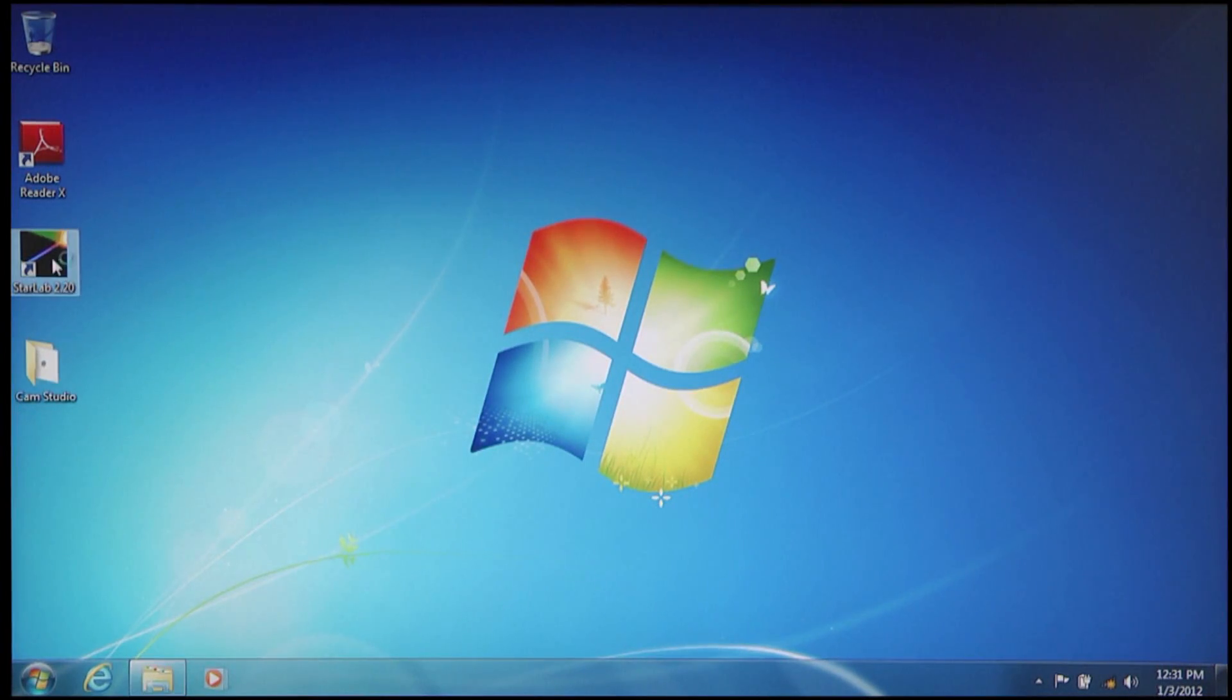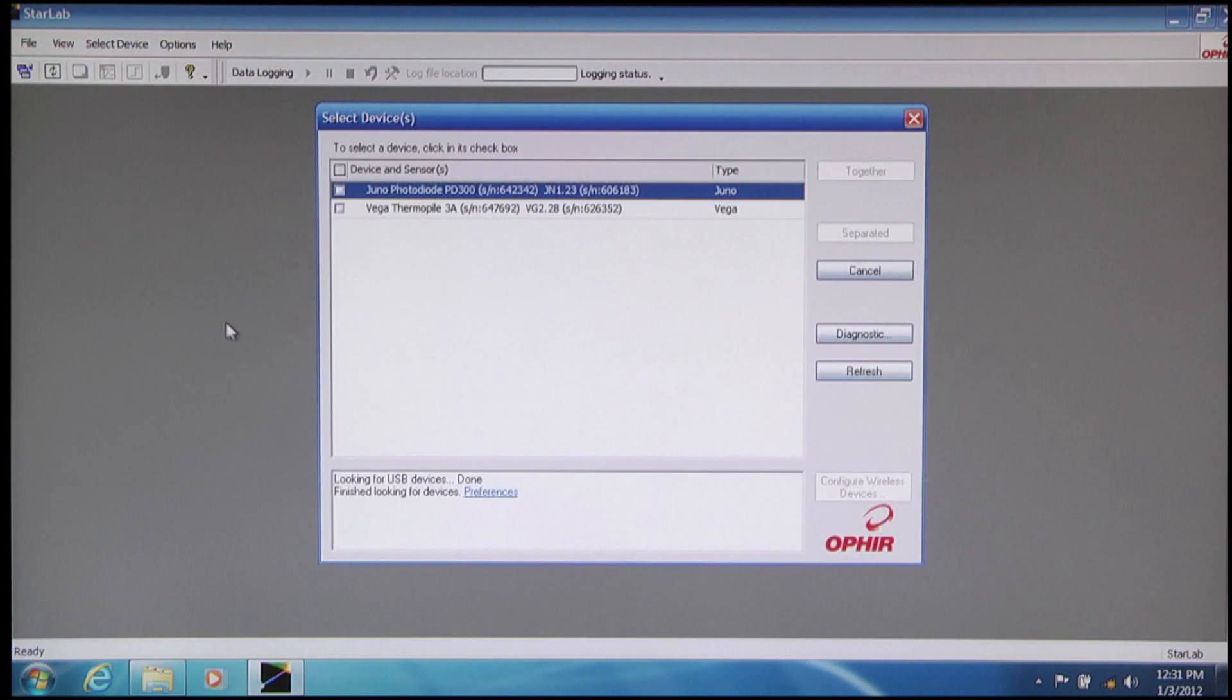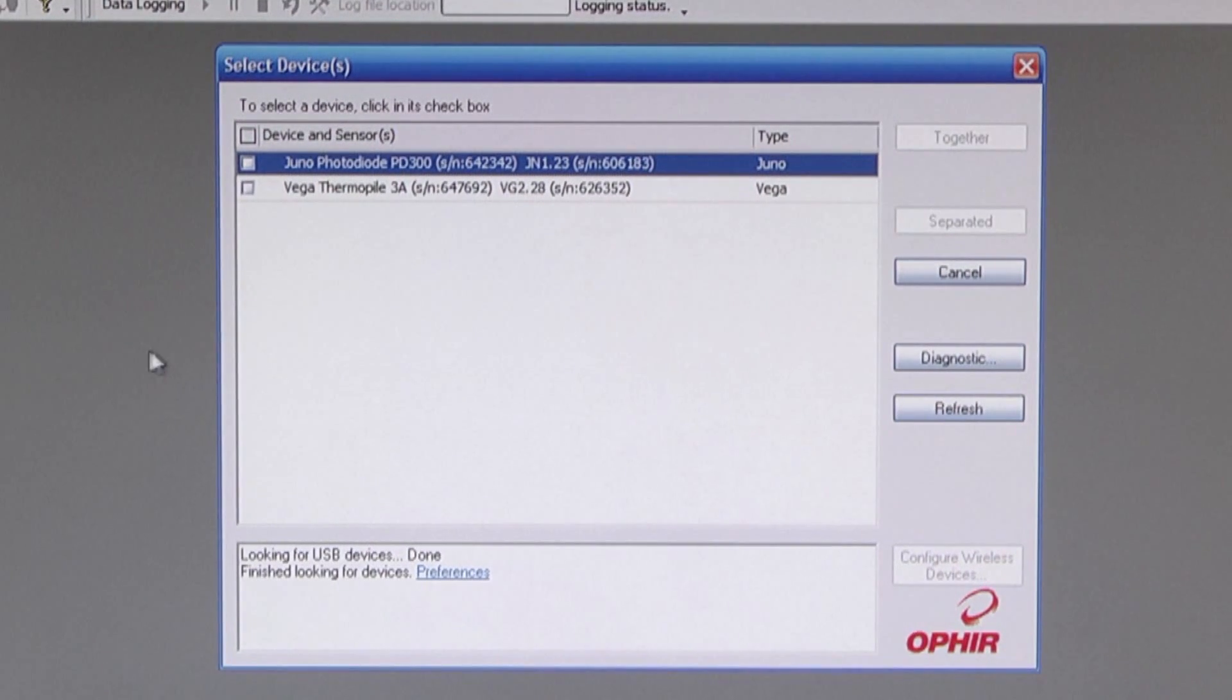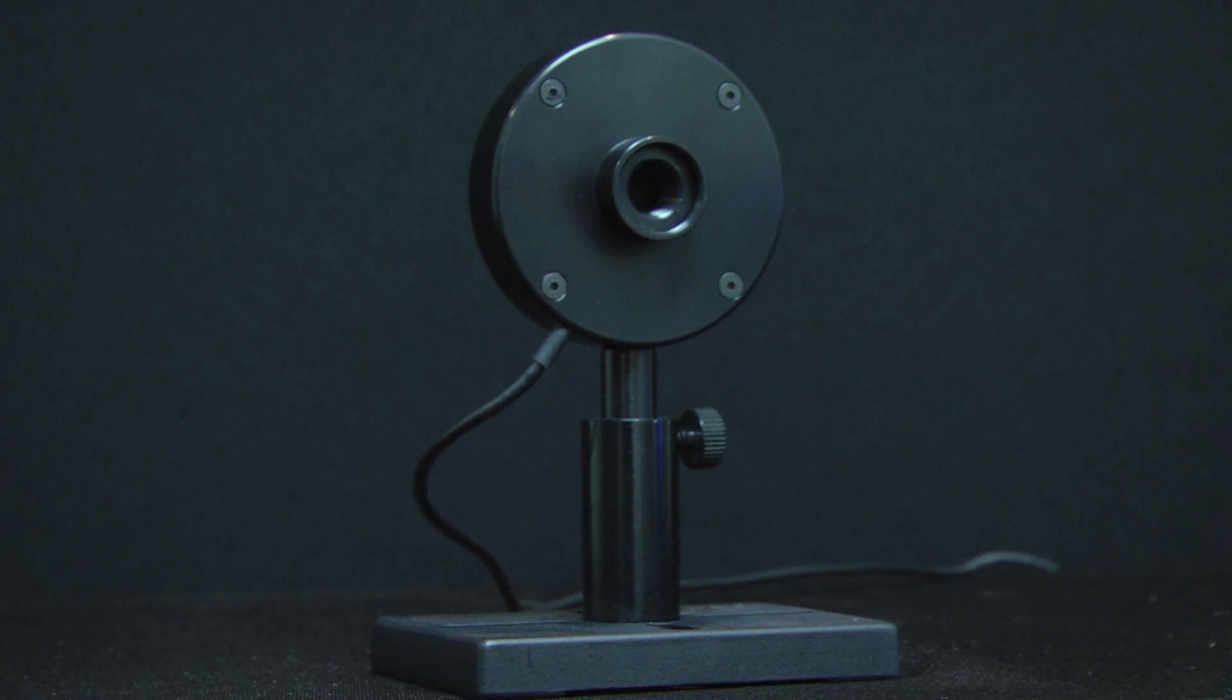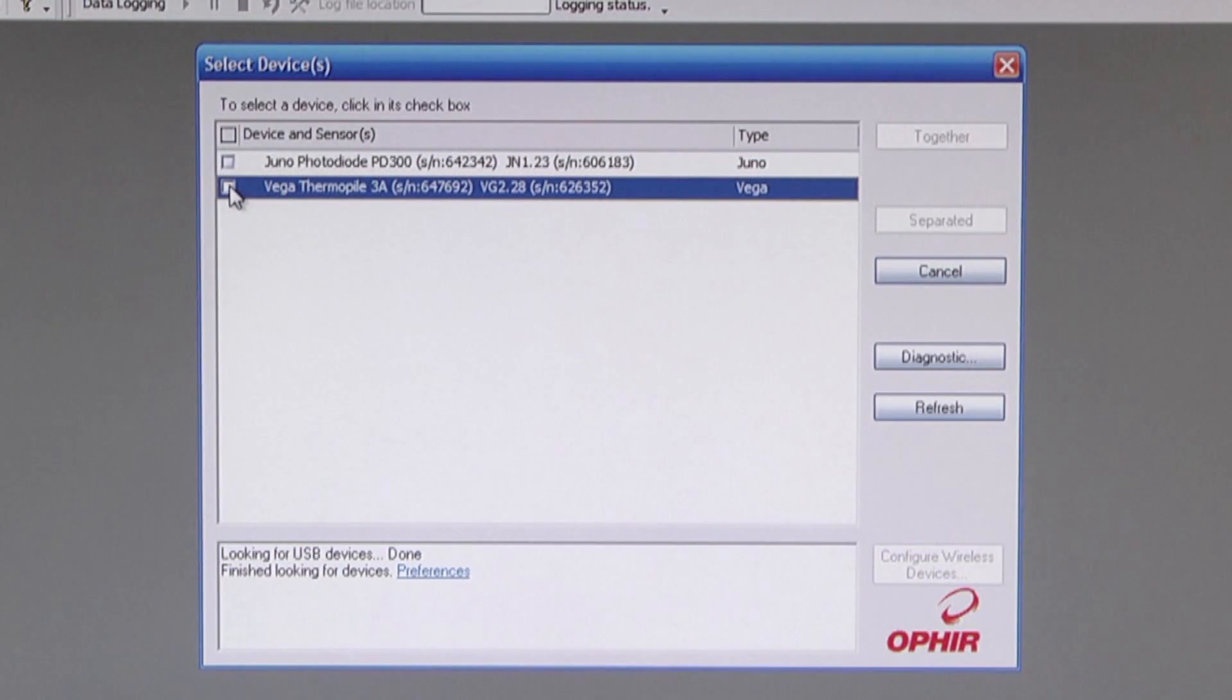As you can see, the two devices attached to the PC appear on the screen. Let's start by working with a single source, the 3A sensor. We'll select the 3A by clicking in its checkbox.